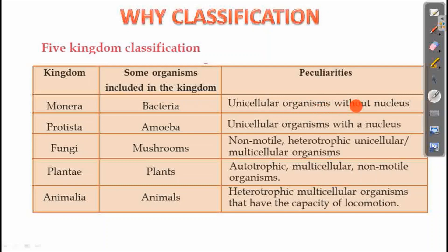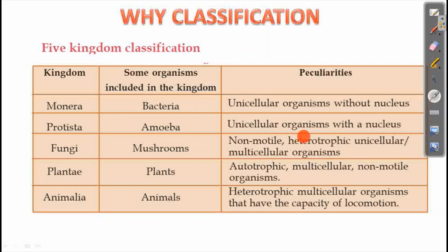Kingdom Monera consists of unicellular organisms without a nucleus — prokaryotic organisms, including bacteria. The next kingdom is Protista, which includes amoeba. Amoeba are unicellular organisms with a nucleus — they are eukaryotes.